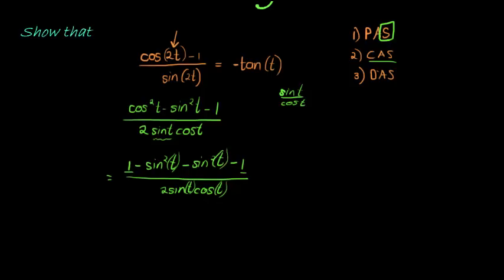And if I simplify the numerator, I hope you see that 1 minus 1 is 0, so minus sine squared t minus sine squared t gives me negative 2 sine squared t. And in the denominator I still have my 2 sine t cos t.